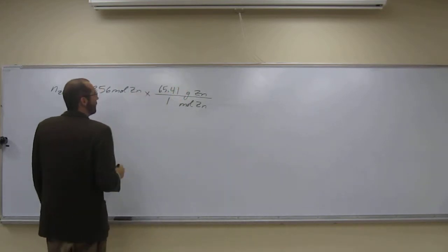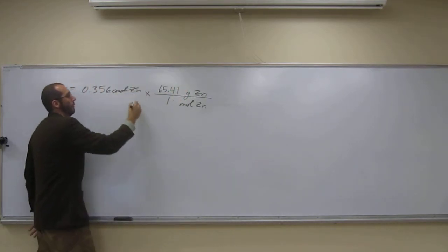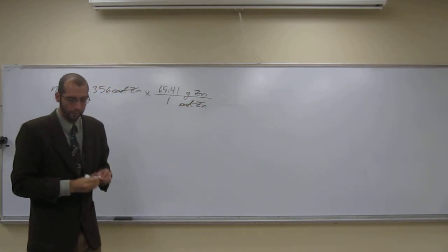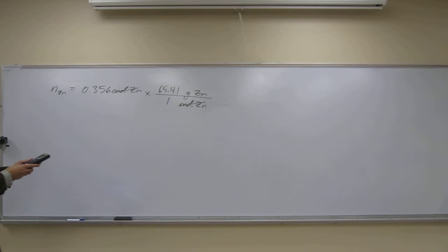Okay, so let's cancel out our units. Moles of zinc. Moles of zinc. Okay, cancel. And so what do we do? Just multiply 0.356 times 65.4.